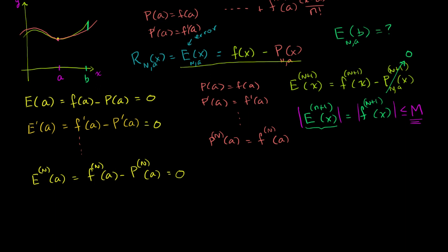In the last video, we started to explore the notion of an error function — not to be confused with expected value, because it really does look like the same notation. But here, E is for error. You'll sometimes see it referred to as a remainder function. And we saw it's really just the difference between the function and our approximation of the function.